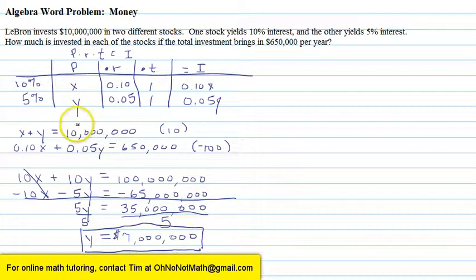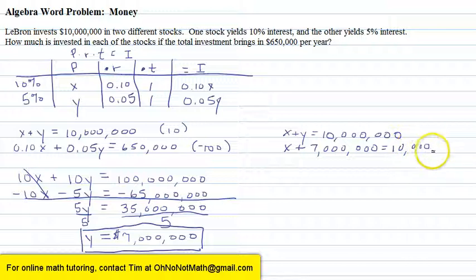So how about the other stock, the 10% interest stock? We take this Y equals 7 million, plug it into either of the first two equations. I'm going to plug it into the first one and we solve for X. So let's take the first equation: X plus Y equals 10 million. X plus, we're going to substitute 7 million in for Y. 7 million equals 10 million. I want to solve for X. So I subtract 7 million from both sides. And I get X equals 10 million minus 7 million is 3 million.